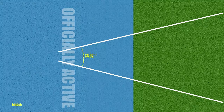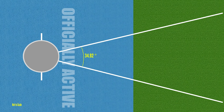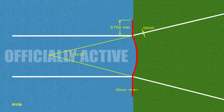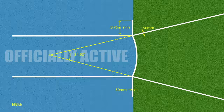For javelin, there is a similar triangular field and you must throw within these boundaries. However, the circle is replaced by a runway which allows the thrower a run-up before throwing. You are not allowed to pass the line from which the throw is measured until the javelin has hit the ground.